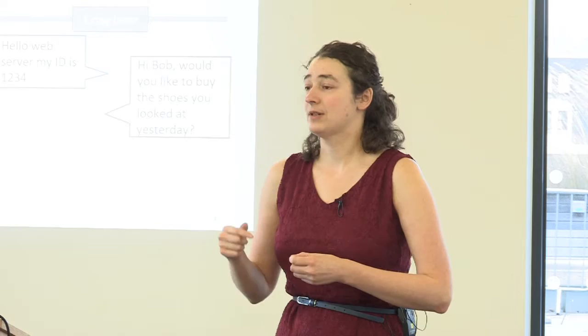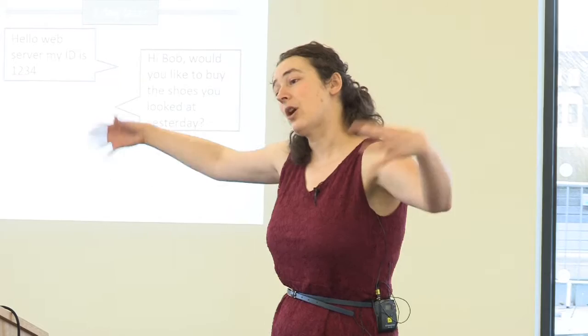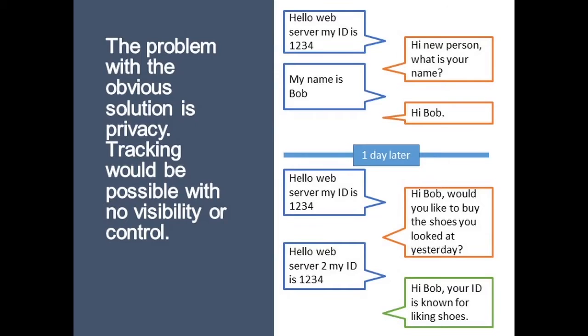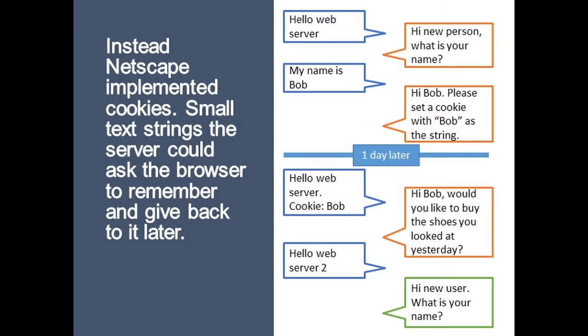If I'm given a unique web browser identification code every time I visit a site and I cannot change that code, they can track me and there's almost nothing I can do about it. There's also a secondary problem: when I speak to more than one server, those servers can collude offline and learn a whole lot about me. It basically damages anonymity. So instead, Netscape decided to invent cookies.